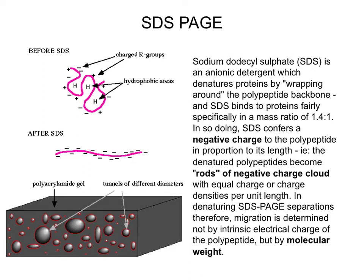SDS-PAGE is commonly used for separating proteins. SDS, or sodium dodecyl sulfate, is an anionic detergent that wraps around proteins under denaturing conditions where the protein becomes linear. After SDS treatment, those anionic SDS molecules line up around your protein polymer, conferring a negative charge to the protein, which then upon separation by electrophoresis allows the polymer to run through the PAGE gel, separating protein molecules based on molecular weights.